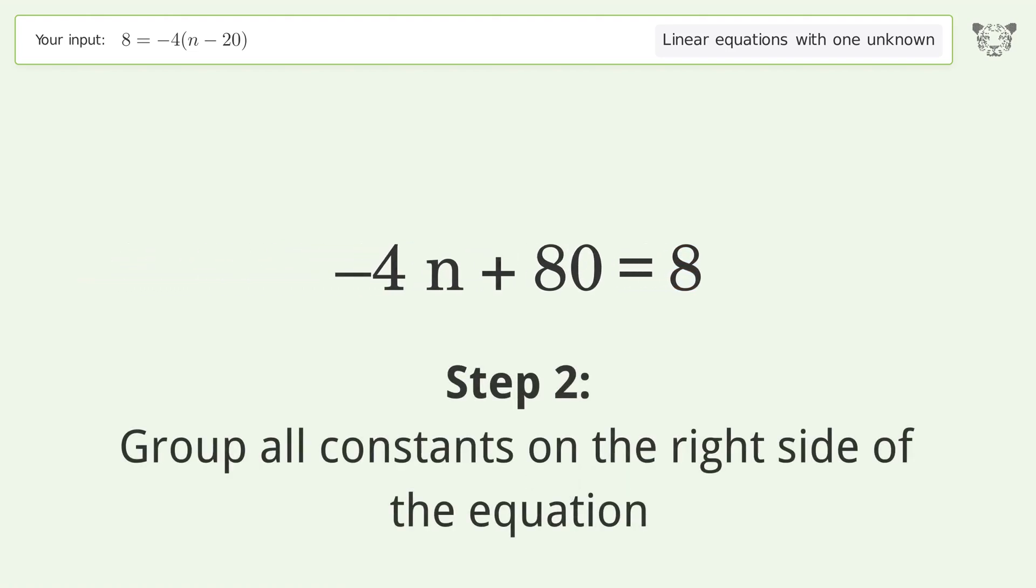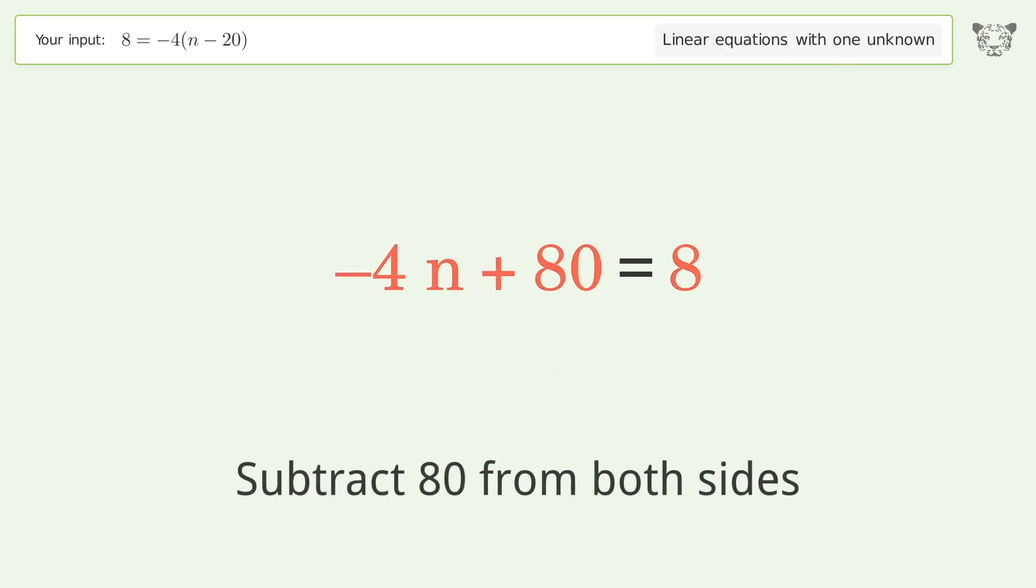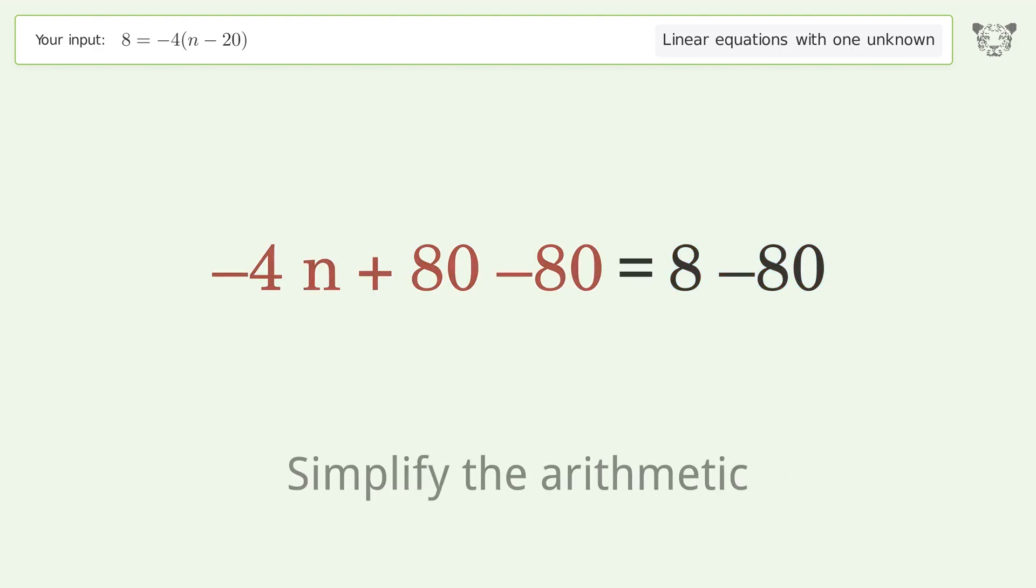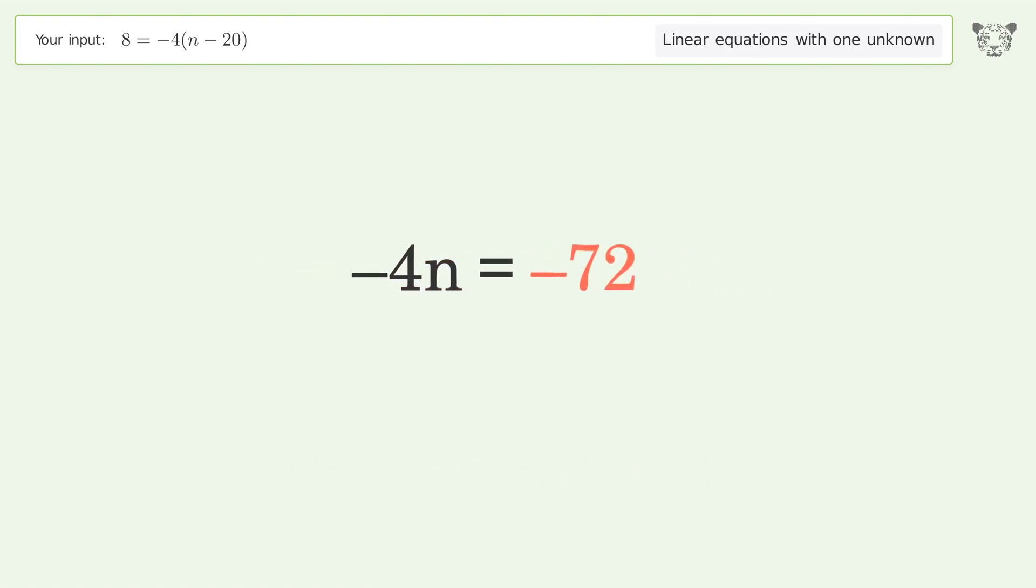Subtract 80 from both sides and simplify the arithmetic. Now isolate the variable by dividing both sides by negative 4.